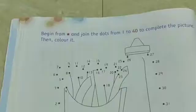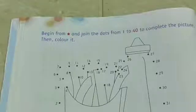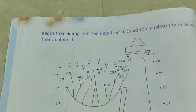Now turn the next page, that is page number 32. And our first question is: begin from star and join the dots from 1 to 40 to complete the picture, then color it. So children, in this question you have to join dots and you have to start from the star.